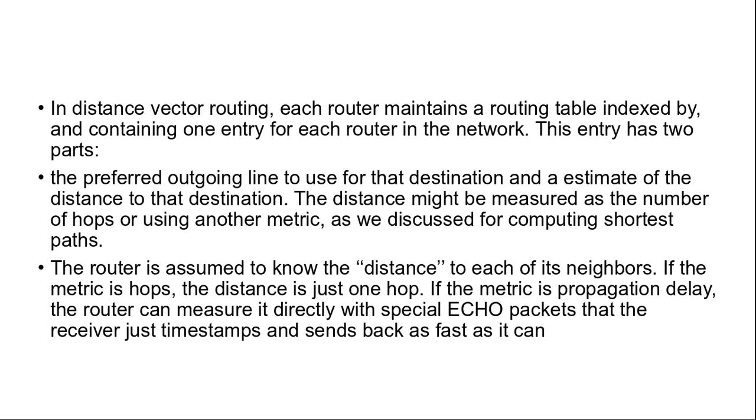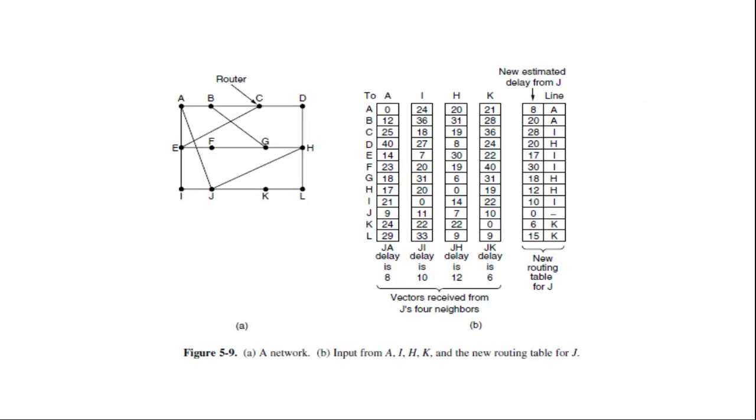If the router knows that the delay to x is m ms, it also knows that it can reach router i via x in x i plus m ms. By performing this calculation for each neighbor, a router can find out which estimate seems the best and use that estimate and corresponding link in its new routing table. Note that here old routing table is not used in the calculation.